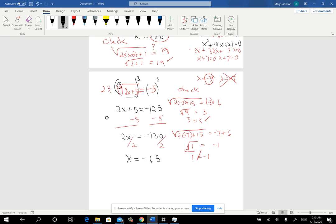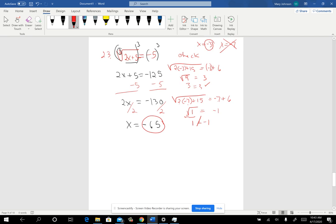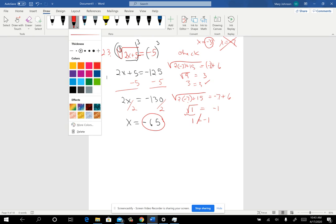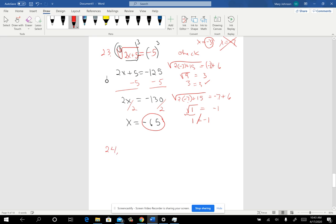Okay, and so that winds up being the solution to this one, just negative 65. All right, and then we've got one more problem. And on this problem, we're doing the cube root of 7x. And on the other side, we've got the cube root of 4x minus 9.